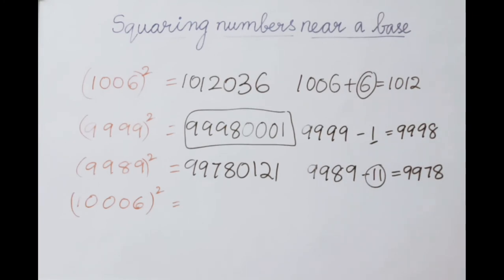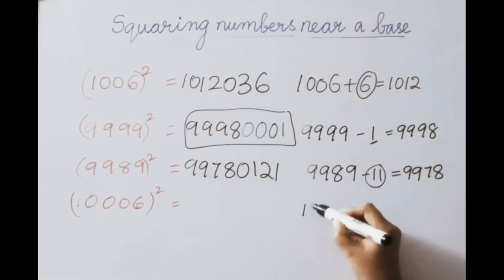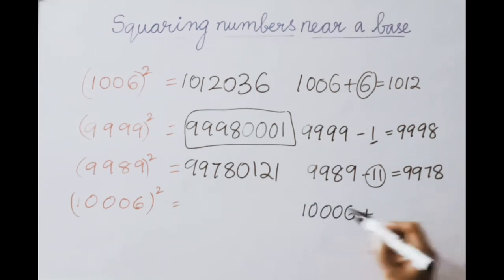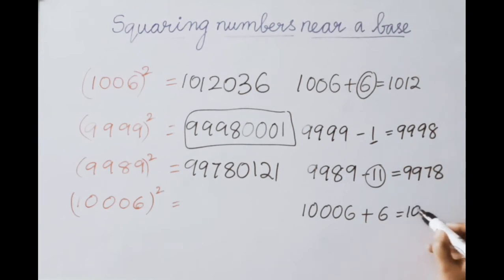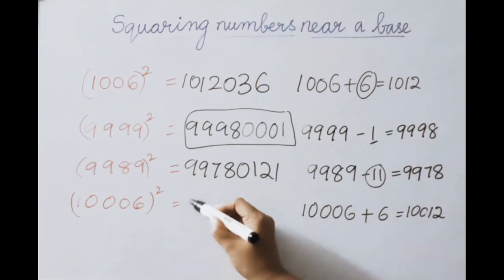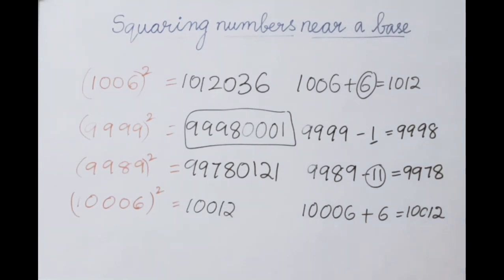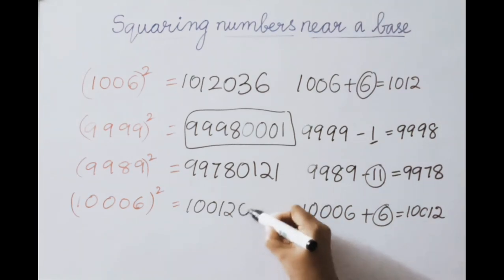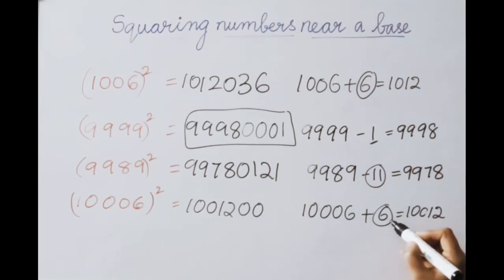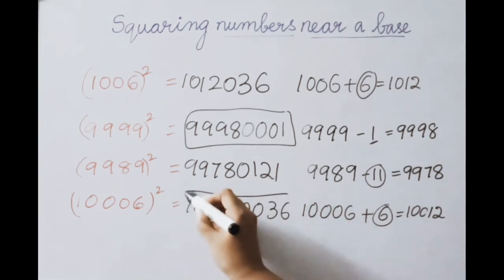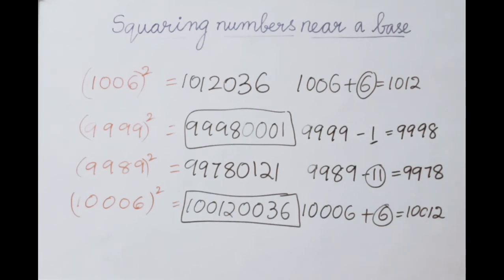Next example: 10006 squared. Base is 10000. Excess value is 6. Add: 10006 plus 6 equals 10012 — first part answer. 6 squared equals 36. Base 10000 means 4 digits allowed, so place 2 zeros: 0036. Therefore 10006 squared equals 100120036. If you like this video, please like, share with your friends, and subscribe. Thank you for watching.